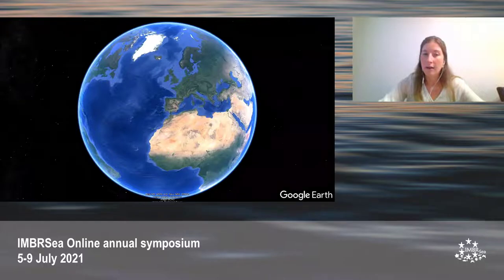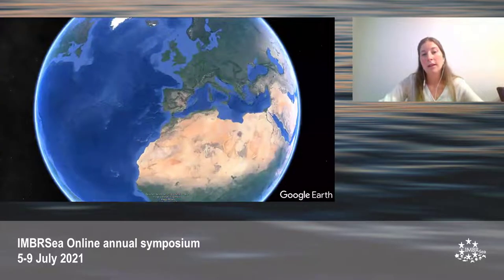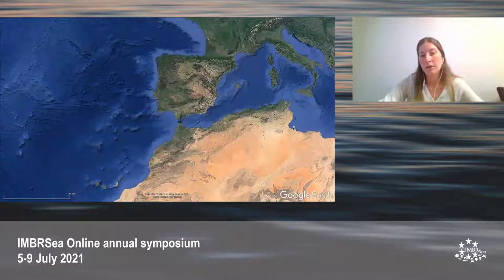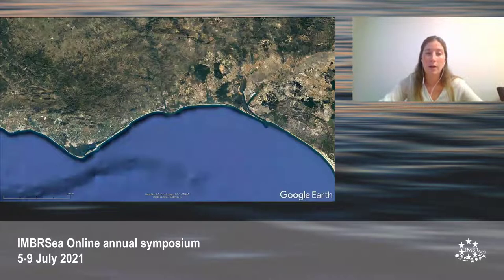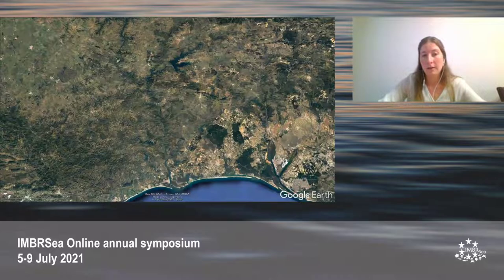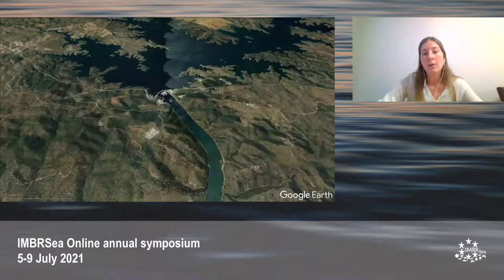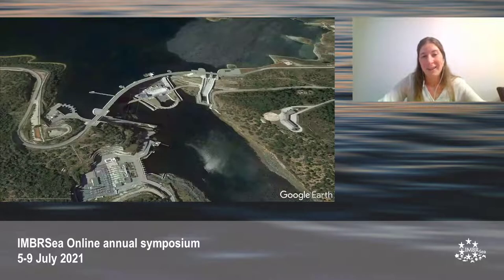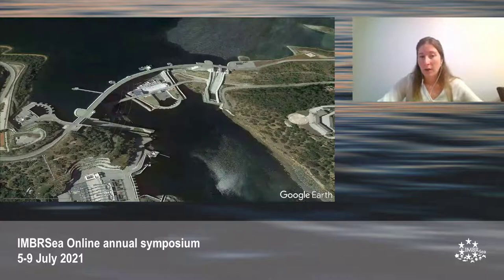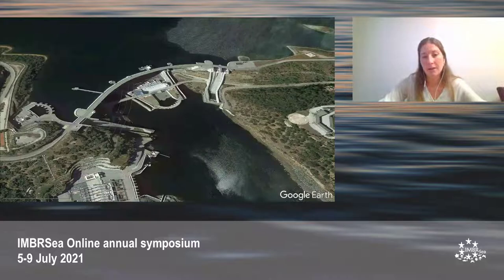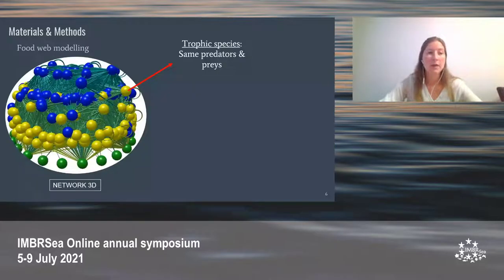The study site is the Guadiana estuary, located in the south of the Iberian Peninsula on the border between Spain and Portugal. Upstream in 2002, the Alqueva Dam was constructed, highly reducing the amount of freshwater input and thus changing the abiotic and biotic conditions. These changes, mixed with the rise of temperature, have made this ecosystem a perfect place for the colonization of non-indigenous species.